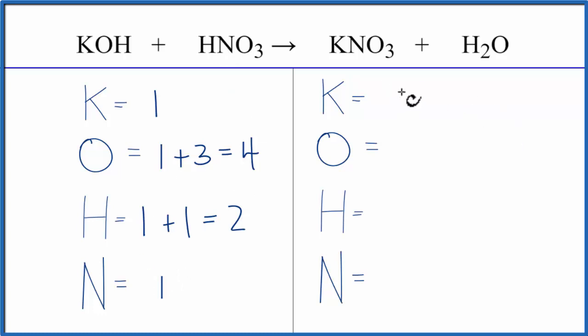On the product side, one potassium, three oxygens, plus this oxygen here. So we have four oxygen atoms. Hydrogens, two, and nitrogens, one.